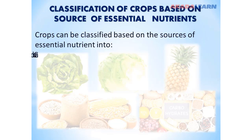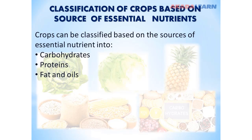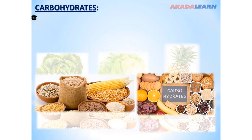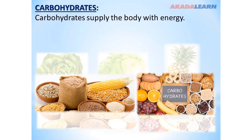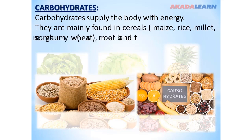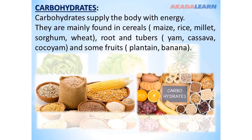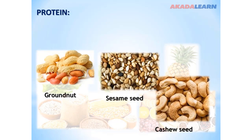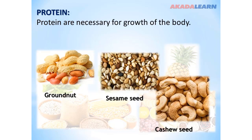Crops are classified into: carbohydrates, proteins, fats and oils, vitamins, and minerals. Carbohydrates supply the body with energy. They are mainly found in cereals, root and sugar crops, and some fruits. Proteins are necessary for growth of the body.